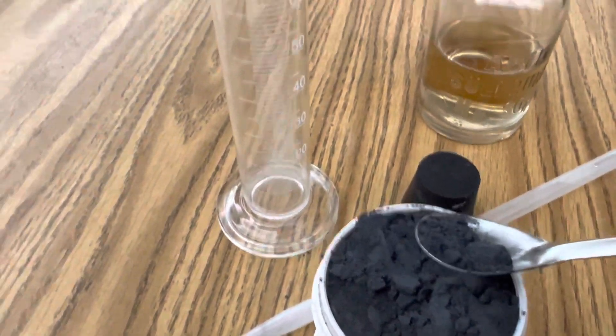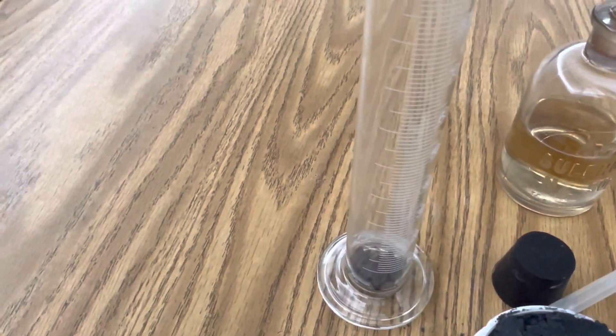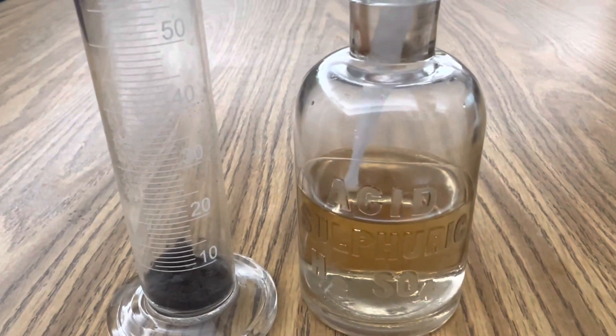Begin by adding your magnesium to your graduated cylinder. And now you're ready to add your sulfuric acid.